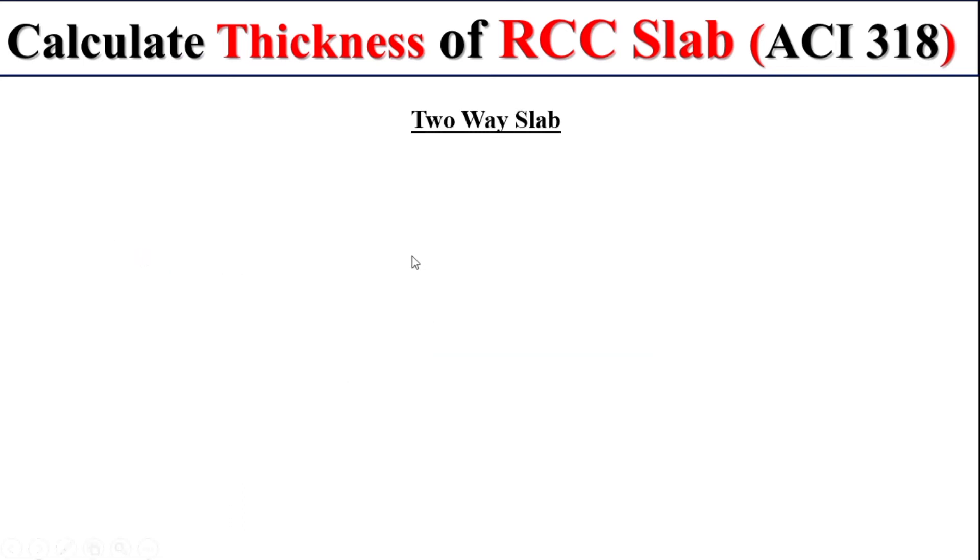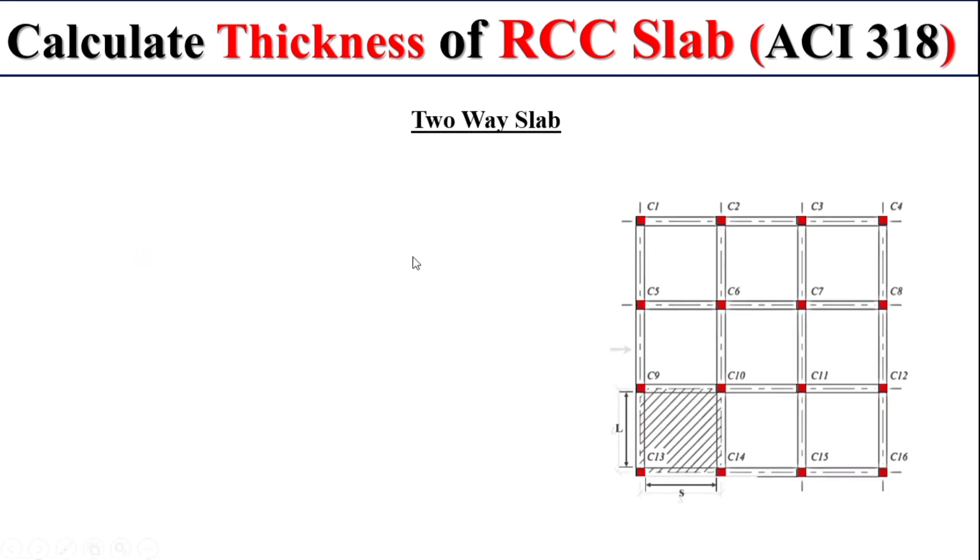Now come to the two-way slab. Remember, if we have a two-way slab and we are interested to find the thickness of the slab, in this case we will just take the total parameter of the slab and then we divide this parameter by 180.